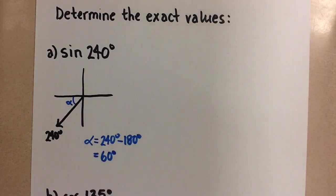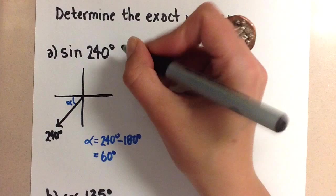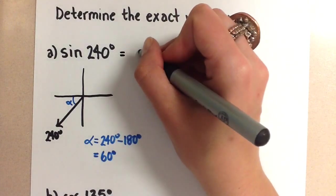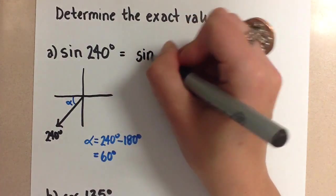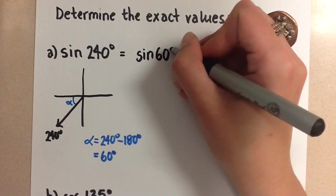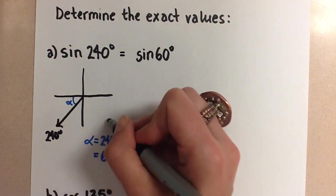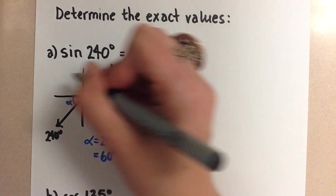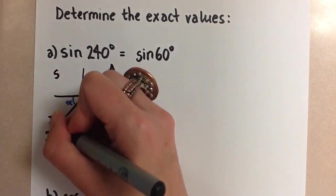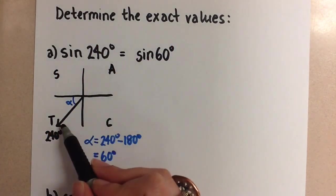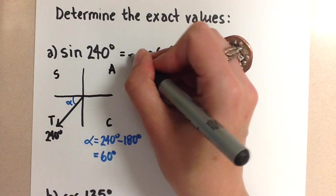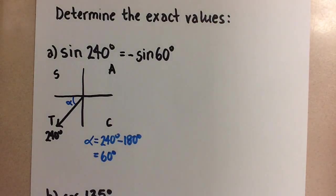So we know that this sine of 240 degrees is going to be the same as sine of 60 degrees which happens to be one of our special angles. We also have to look at the CAST rule here. And in the third quadrant the sine ratio is negative so make sure that we add a negative on that sine of 60.